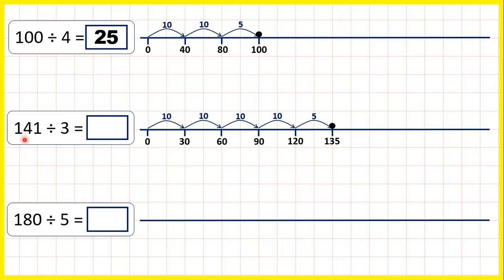120 plus 15 is 135. Now we're very close to 141. You might spot that 141 is 6 more than 135, and 6 is 2 lots of 3. So if we add another 2 lots of 3, another 6, that takes us to 141.